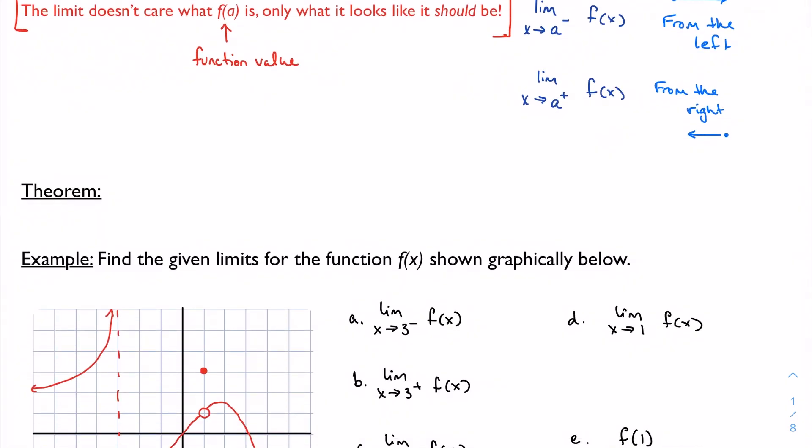The big theorem is that the limit as x approaches a is equal to some number L if and only if the limit from the left and the limit from the right are both equal to that same number L. We read the sentence both ways: the limit overall equals L if both of the one-sided limits equal L, and vice versa.